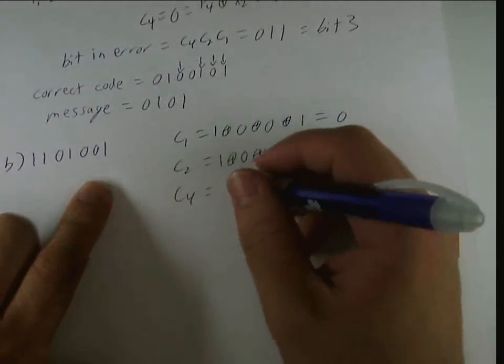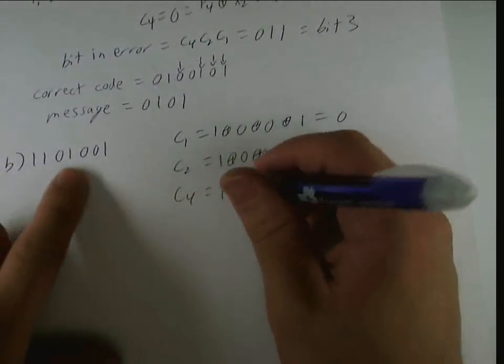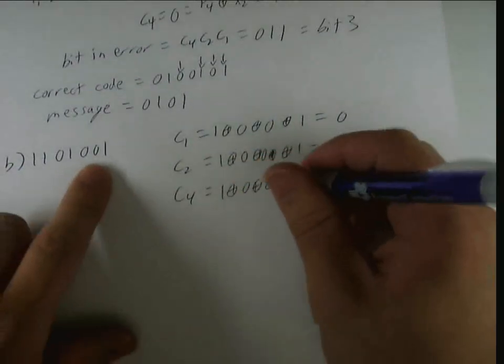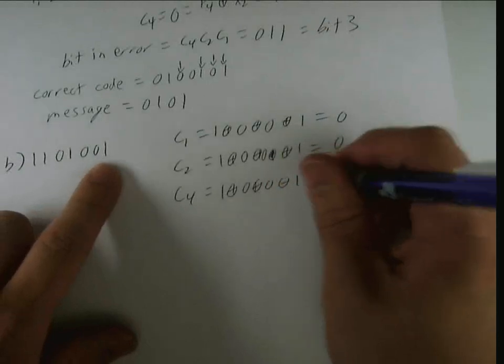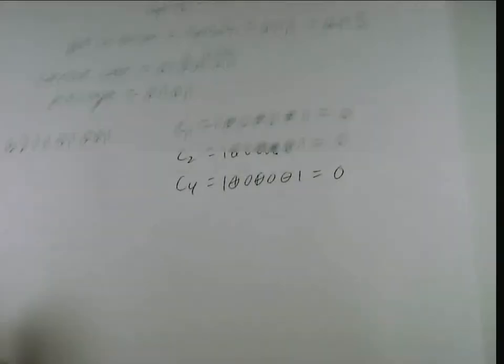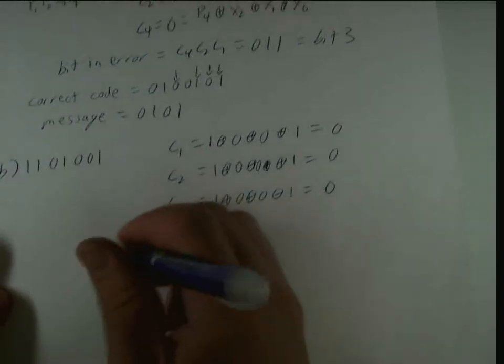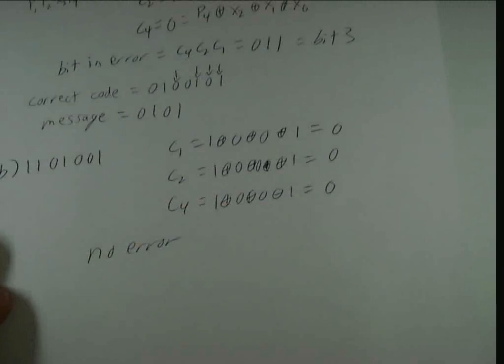c4 is going to be 1, xor 0, xor 0, xor 1. Which, again, is 0. Which means, no bit is an error. So, no error.